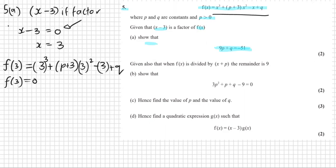So it'd be 3 of 3 plus P plus 3 times by 3 squared minus 3 plus Q. F of 3 also equals to zero, because it's a factor. So if we simplify all this information, 3 of 3 is 27. P plus 3 times 3 squared is 9, so we have 9P. Then we have 9 times 3, which is another 27. Minus 3 plus Q, and this is all equal to zero.